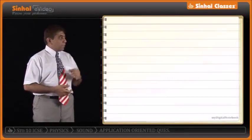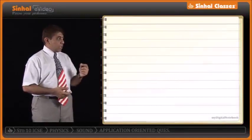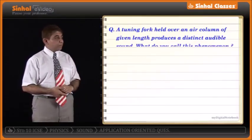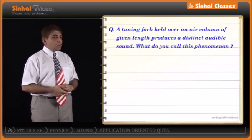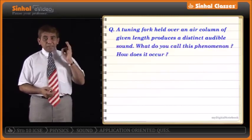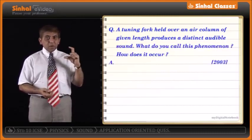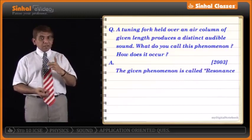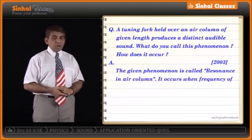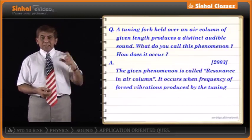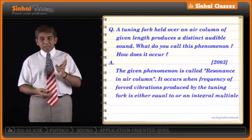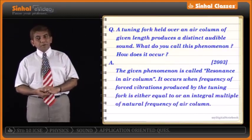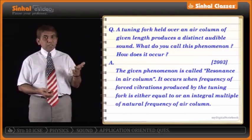A tuning fork is held over an air column of a given length and produces a distinct audible sound. A distinct, clear, loud sound — the phenomenon is resonance in an air column. It occurs because the length of the air column has a frequency equal to or an integral multiple of the frequency of the vibrating tuning fork, and as a result resonance occurs.